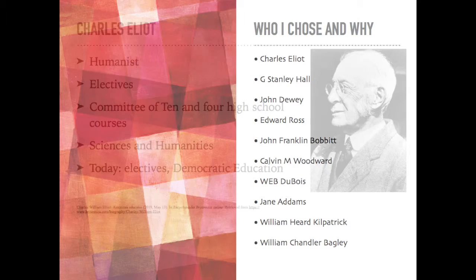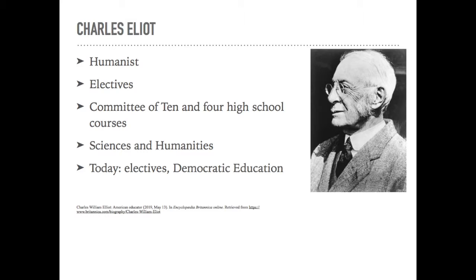Charles Eliot was a humanist and a mental disciplinarian, though he differed in some degrees with the others. He believed that anything could be a subject if you can study it over time. I learned from Encyclopedia Britannica that he removed required courses at Harvard because he didn't want it to be too restrictive. He argued for electives at the secondary level, and a compromise was made within the Committee of Ten for there to be four courses of study at high schools. He also wanted the same curriculum for all students, whether preparing for life or college, and it needed to include access to sciences and humanities. By 1908, he was in favor of sorting students by probable destinies.